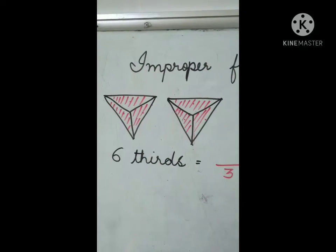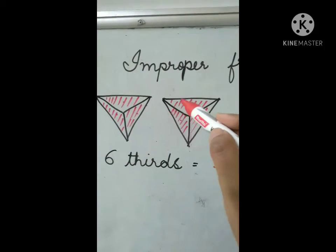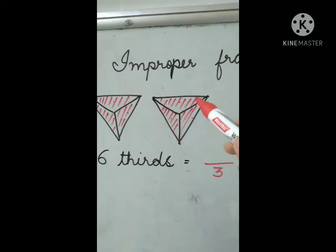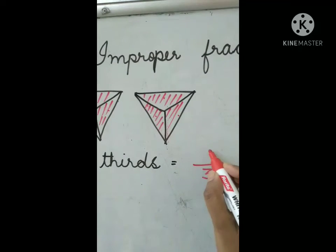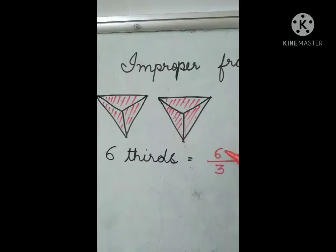Now you'll have to see how many parts are shaded. 1, 2, 3, 4, 5, 6. 6 parts are shaded. So I'll write here 6. And we read this as 6 thirds.